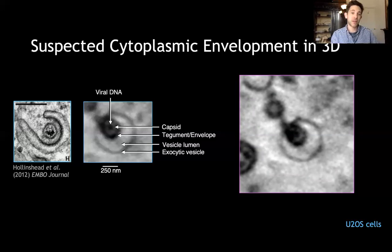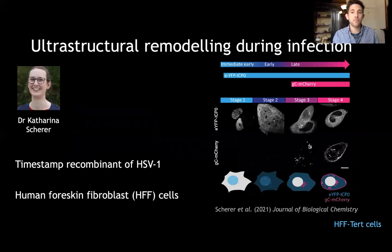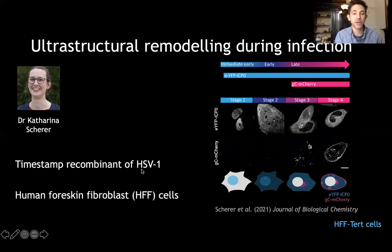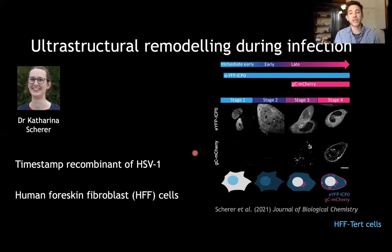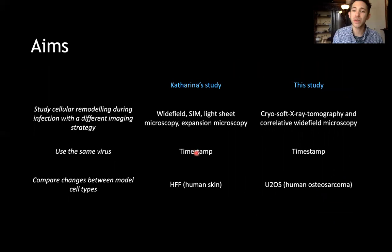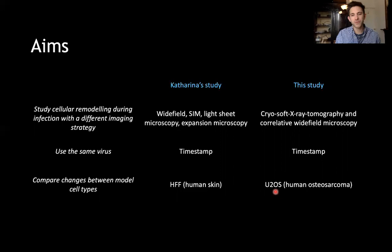Now I want to tell you about a second project: understanding how the virus remodels cellular compartments during infection. This was largely based on work done by Dr. Katerina Scherer, a postdoctoral scientist at the Department of Chemical Engineering at the University of Cambridge. She infected skin fibroblasts with a recombinant of HSV-1 called the timestamp virus, which allows you to distinguish between four different stages of infection based on the expression of fluorescently tagged early and late viral proteins. We designed a similar study using x-ray tomography instead of fluorescent microscopy, working on a model cell line called U2OS cells, to see if some of the changes were consistent with what had been previously observed in HFFs.